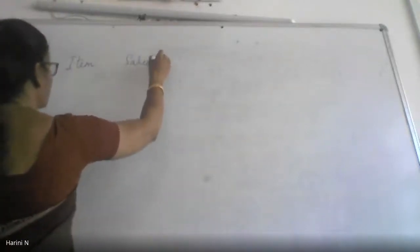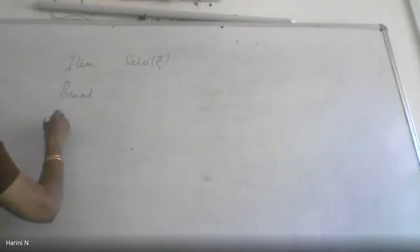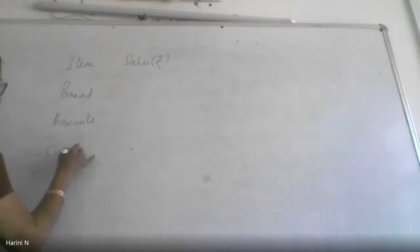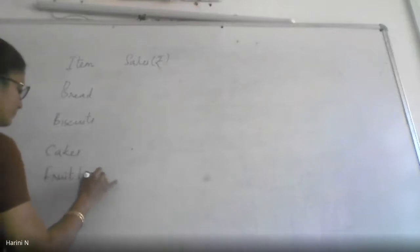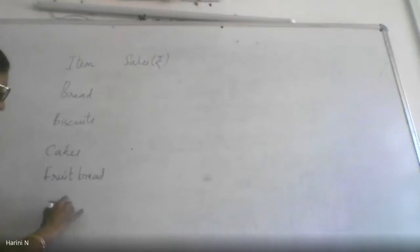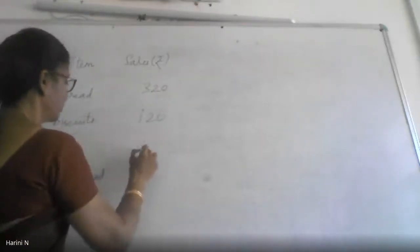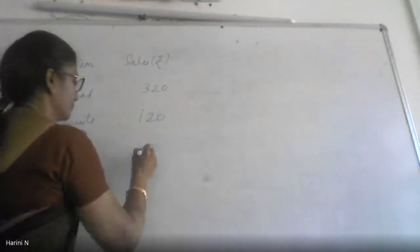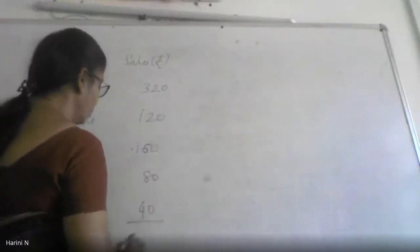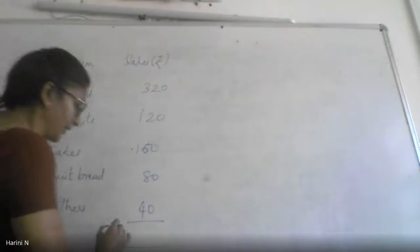The problem given: the sales in rupees for items in a bakery — that is bread, biscuits, cakes, fruit bread, and others. The sales in rupees are given as 320, 120, 160, 80, and 40. The total sales for all these items comes out to be 720. This information has to be put in the form of a pie chart.